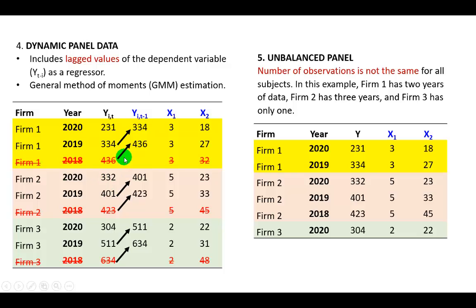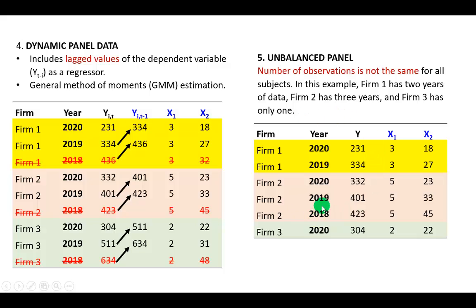A dynamic panel includes lagged values of the dependent variable Y, as represented here. An unbalanced panel is where the number of observations is not the same for all subjects. In this example, firm 1 has 2 observations, firm 2 has 3 observations, and firm 3 has only 1. You have to be careful with unbalanced panels because you might encounter problems of inconsistent and biased parameter estimates if the right set of assumptions are not made.